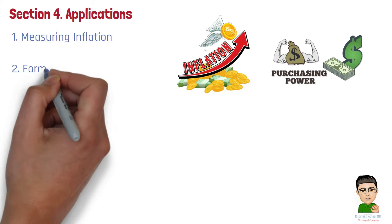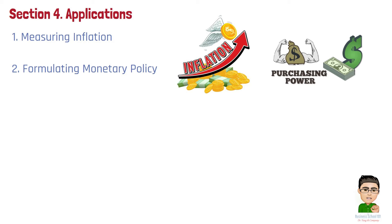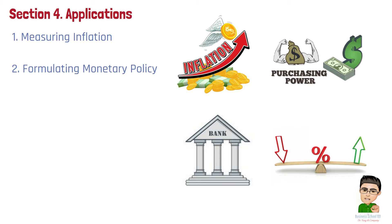Number 2. Formulating monetary policy. Central banks and monetary authorities use CPI data to help set interest rates and manage inflation expectations. A high CPI reading may prompt a central bank to increase interest rates to control inflation, while a low reading might encourage a rate cut to stimulate the economy.